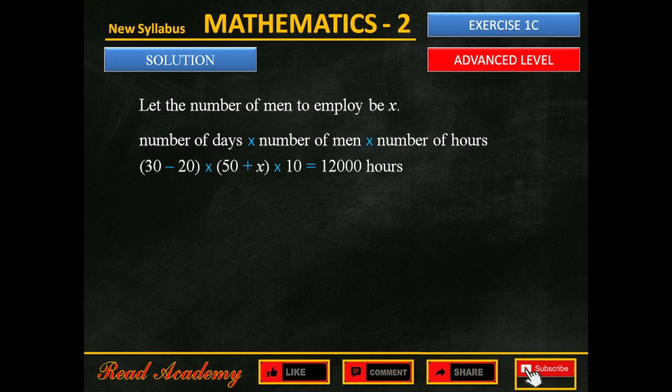Number of remaining days is 30 minus 20. Number of total men equals 50 plus x, and the number of hours each man will work is 10. 30 minus 20 equals 10. 10 times 10 equals 100.